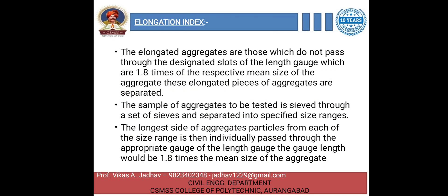Elongated aggregates are those which do not pass through the designated slots of the length gauge, which are 1.8 times the respective mean size of the aggregate. These elongated pieces are separated by passing through the length gauge; if a piece does not pass, it is separated.